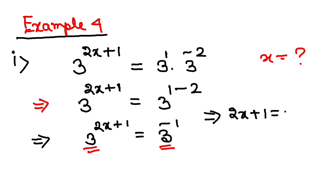So 2x plus 1 equals minus 1. That will give you 2x equals minus 2, and that will give you x equals minus 1. So x equals minus 1 is the required value of x.